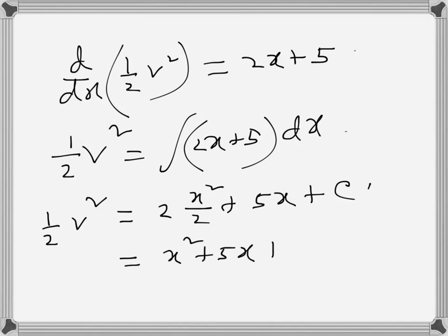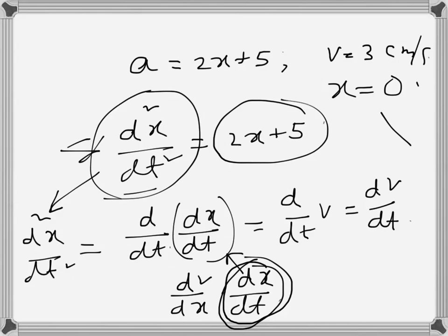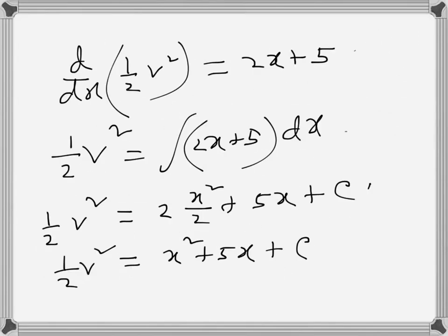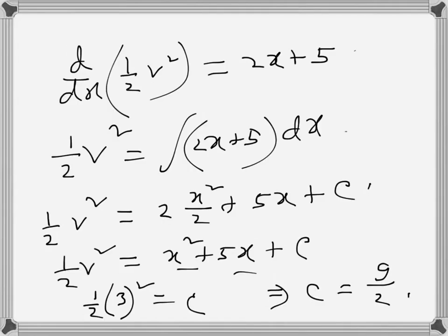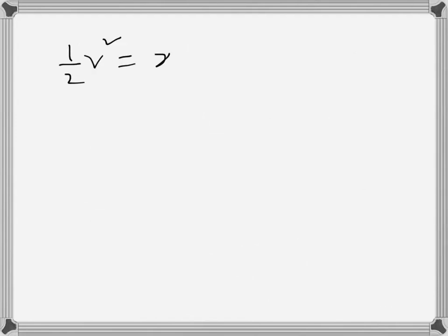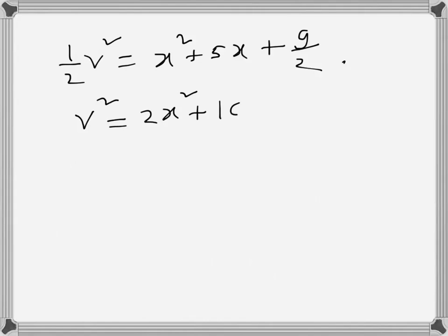So we have ½v² equals x² plus 5x plus c. Applying the boundary condition — when x equals 0, velocity is 3 cm/s — we get ½ times 9 equals 0 plus 0 plus c, so c equals 9/2. Substituting back: ½v² equals x² plus 5x plus 9/2. Multiplying both sides by 2 gives v² equals 2x² plus 10x plus 9.